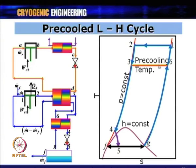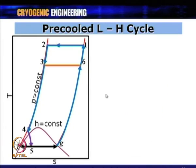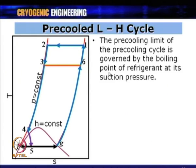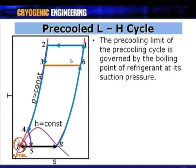The pre-cooling temperature (T3 or T6) is determined by the pre-cooling circuit — the type of refrigerant and its pressure. The pre-cooling limit is governed by the boiling point of the refrigerant at its suction pressure. For common refrigerants at 1 bar: CO2 is 216 K, NH3 is 240 K, and R134A is 247 K.